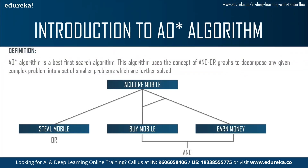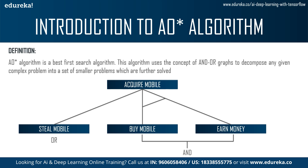By definition, AO star algorithm is a best-first search algorithm. This algorithm uses the concept of AND-OR graphs to decompose any complex problem into a set of smaller problems which are then solved. So if you have a problem and give it to an AO star algorithm, it will break it down into chunks that can be solved easily, solve those smaller chunks individually, and then combine the answers to provide a final result.